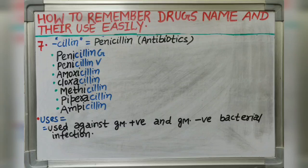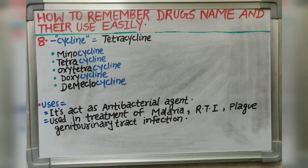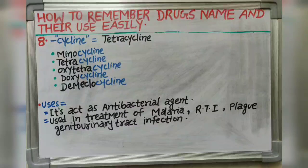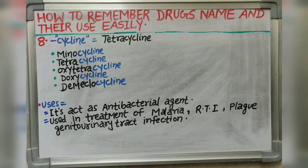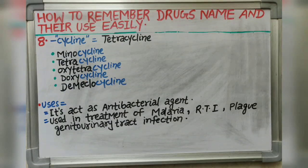Next suffix is -cycline. It indicates tetracyclines. Drugs like minocycline, tetracycline, oxytetracycline, doxycycline and demeclocycline each end with the -cycline suffix. It is used as an anti-bacterial agent in treatment of malaria, respiratory tract infection, plague, genitourinary tract infection, etc.